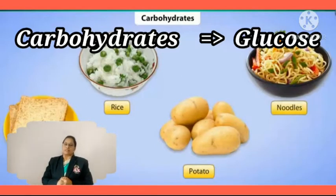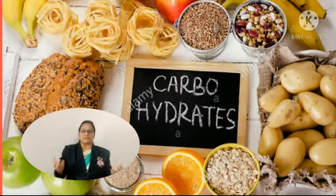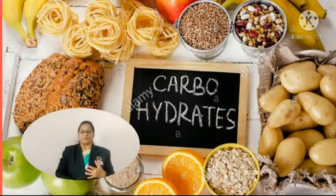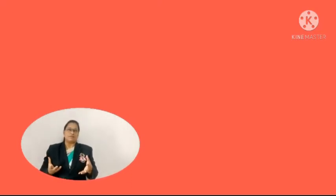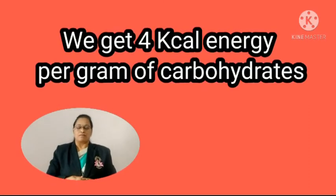Food items from which we can get carbohydrates include all types of cereals, milk, jaggery, sugarcane sugar, many fruits, and some vegetables like potatoes and sweet potato. Sweet items made from cereals are the main foodstuffs giving us carbohydrates. We get 4 kilocalories of energy per gram of carbohydrate.